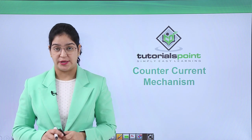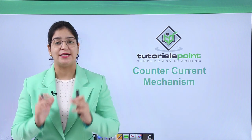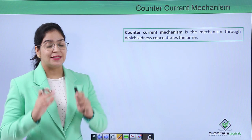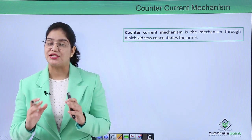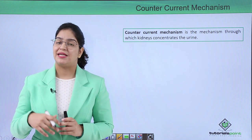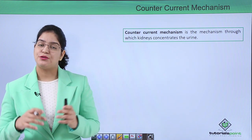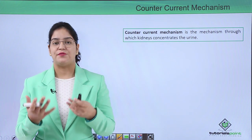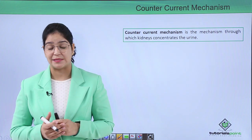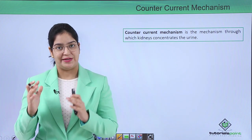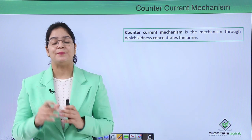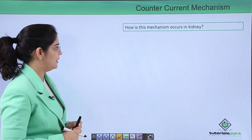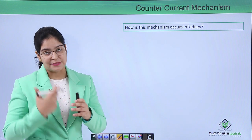Hello guys, welcome back to Tutorials Point. Today we are going to learn about a very important topic: the counter-current mechanism. Counter-current mechanism is the mechanism through which the kidney concentrates the urine. We, the terrestrial animals, need to conserve water, and to do so we need to urinate very concentrated urine. When we are dehydrated, the kidney makes a concentrated urine.